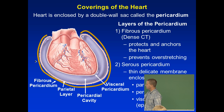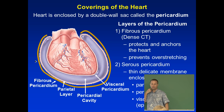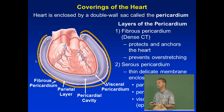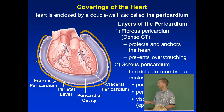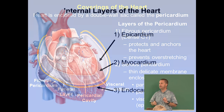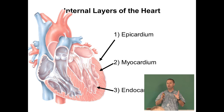The pericardial sac is important because it reduces friction. It has an outer fibrous layer and then an inner visceral layer — 'visceral' meaning surrounding an organ. It also has a serous layer, which secretes a small amount of fluid to line the pericardial sac.